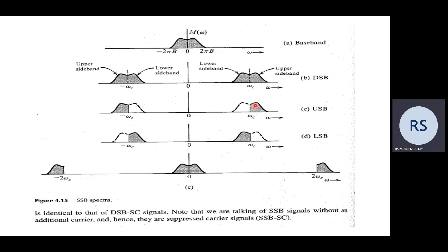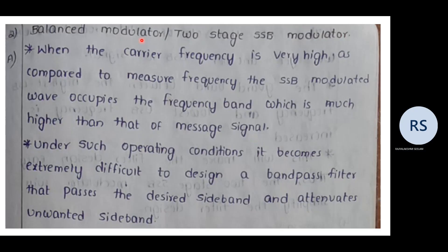The spectra of USB (upper sideband) shows only the upper sidebands; the lower sidebands are excluded. For LSB representation, we leave the USB and retain only the lower sideband. This is the SSB spectra. Now let us look at the balanced modulator, or two-stage single sideband modulator.